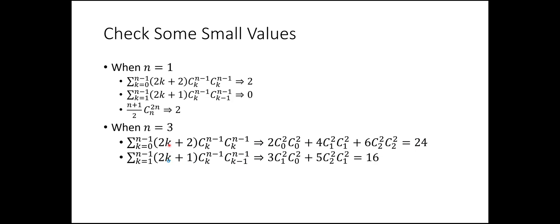The second summation for n=3 has k going from 1 to 2. When k=1: coefficient is 3, giving 3 times C(2,1) times C(2,0). When k=2: coefficient is 5, giving 5 times C(2,2) times C(2,1). That sum is 16. So the total left-hand side is 16 plus 24 equals 40. The right-hand side: (n+1)/2 times C(2n,n) = 2 times C(6,3) = 2 times 20 = 40. So 40 equals 40 — the equality holds.